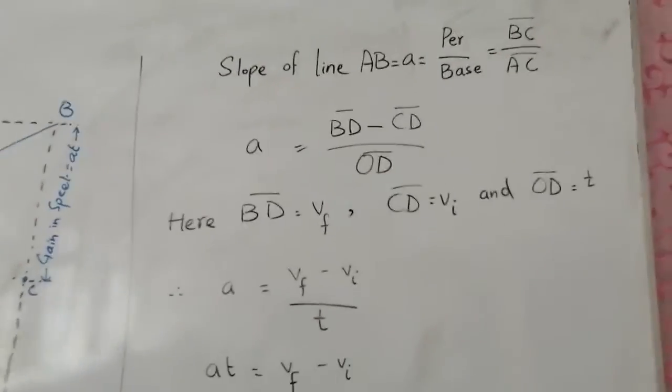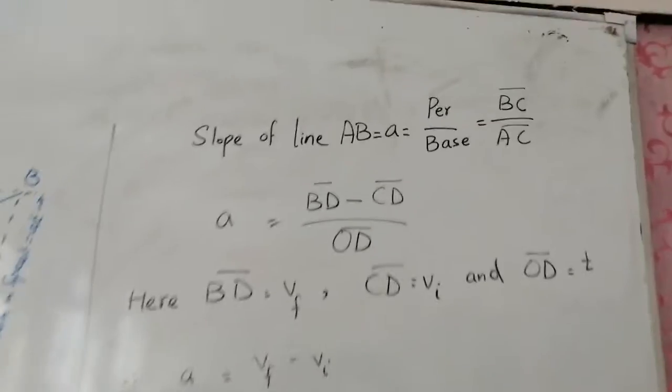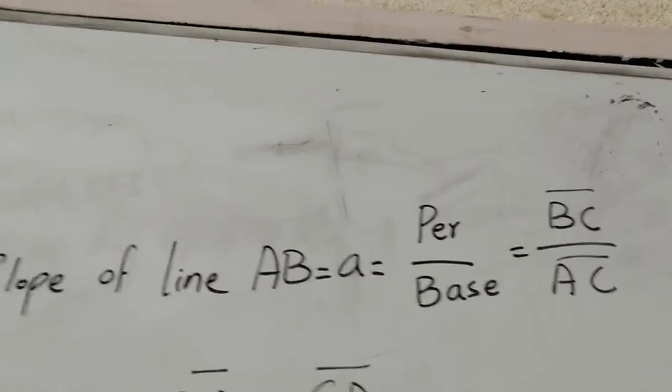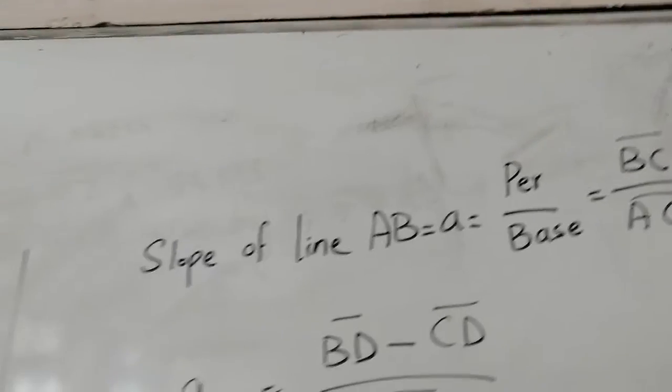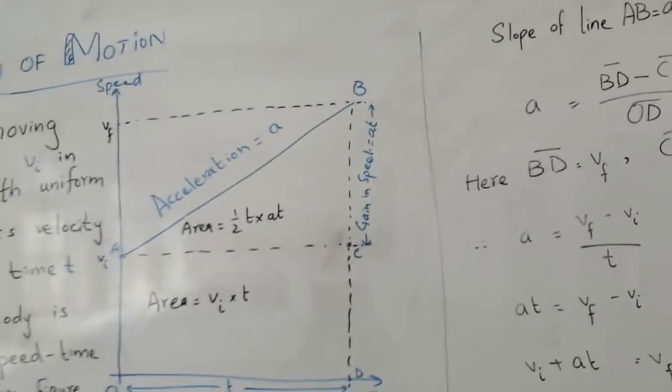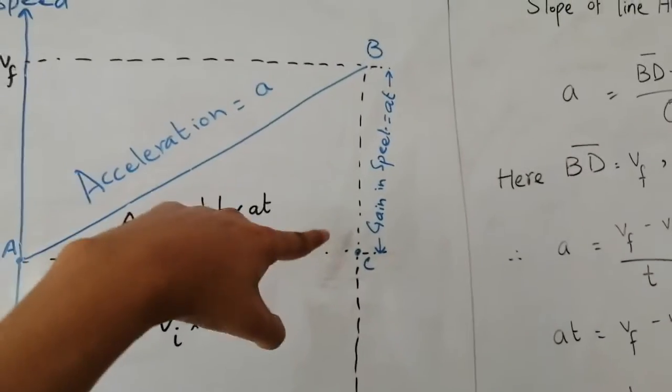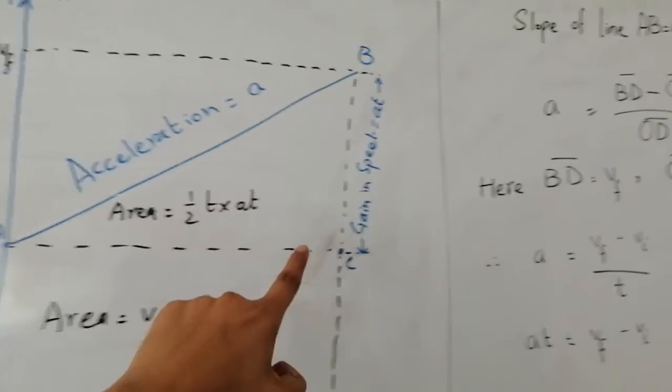Now we explain the first equation of motion by using the slope of line AB. The slope of line AB is a, which equals perpendicular over base. The perpendicular from the diagram is BC and the base is AC.